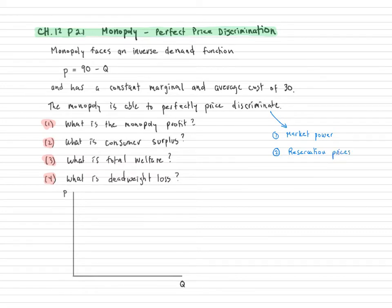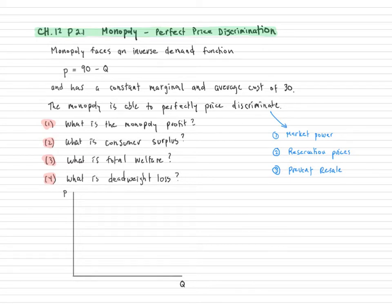Consumers have to be different in terms of what they are willing to pay for the good. The third — and this is very important — the monopoly must be able to prevent resale. We can't have the monopoly sell the good to some consumers at a cheap price and those consumers turn around and sell it to people the firm would like to charge a high price. For example, you can't have retired people buy all the cheap movie tickets and then sell them to regular people. Almost all firms that are not perfectly competitive have some ability to price discriminate.